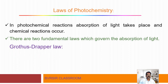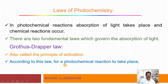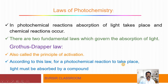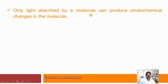The first law is the Grotthuss-Draper law. It is also called the principle of activation. According to this law, for a chemical reaction to take place, light must be absorbed by the compound. When light is absorbed by the compound, then only there is the possibility of a chemical reaction. Only light absorbed by the molecule can produce a photochemical change in that molecule.